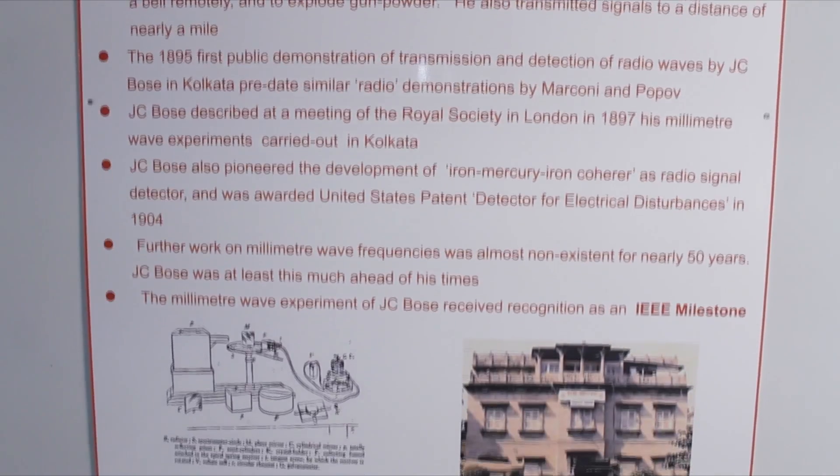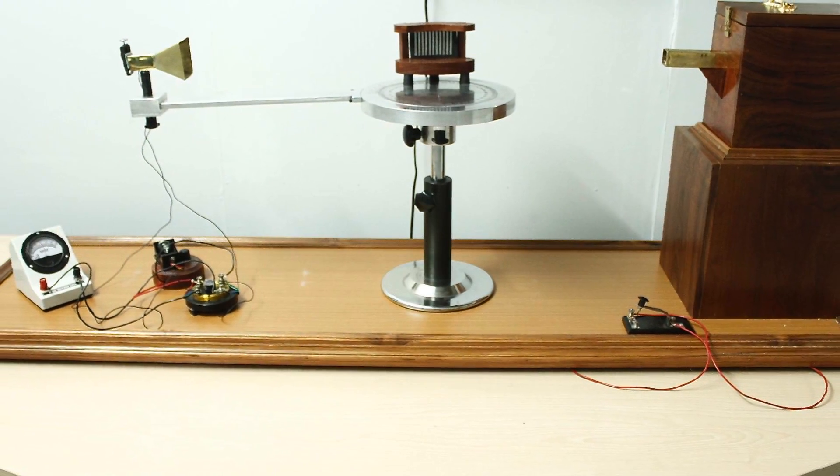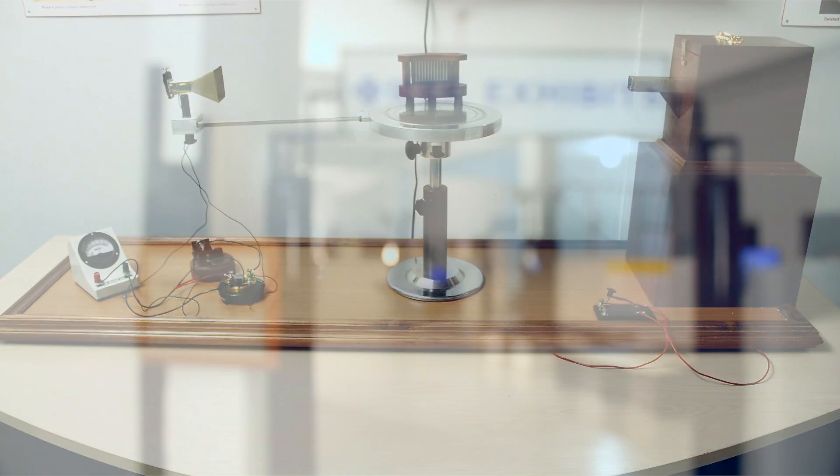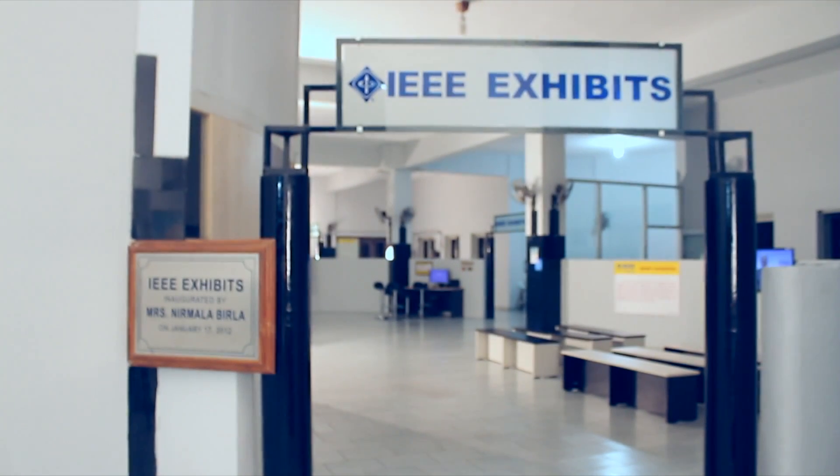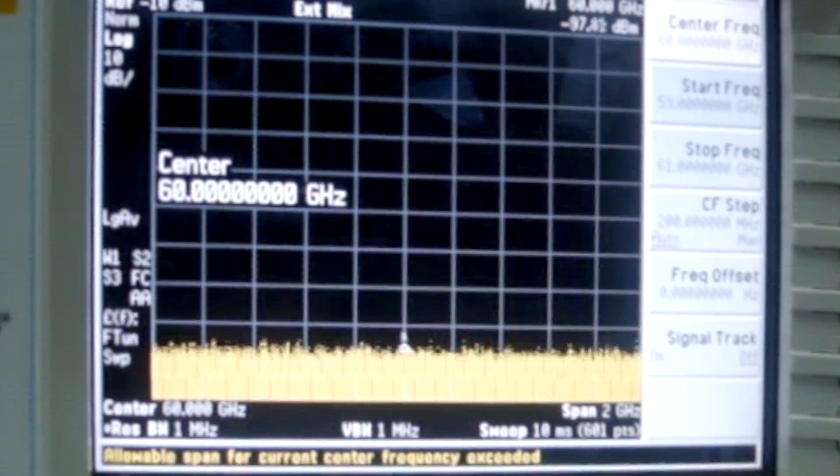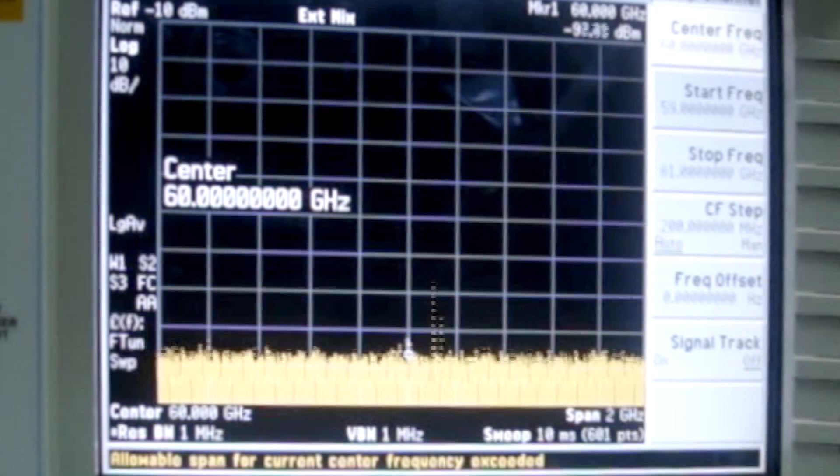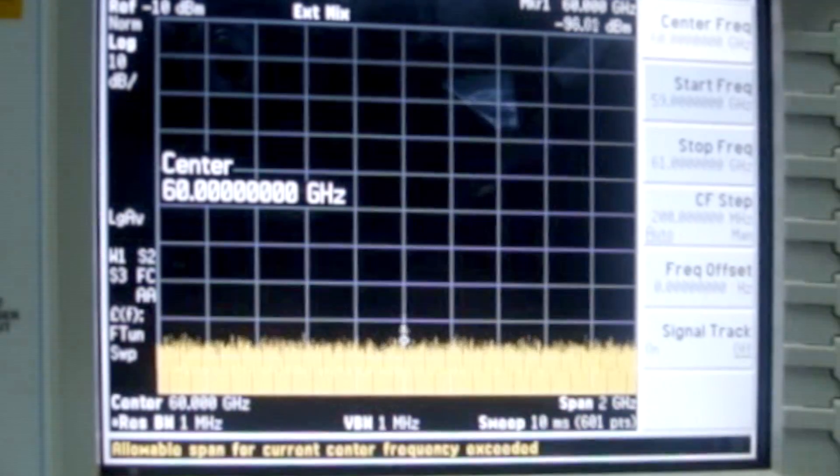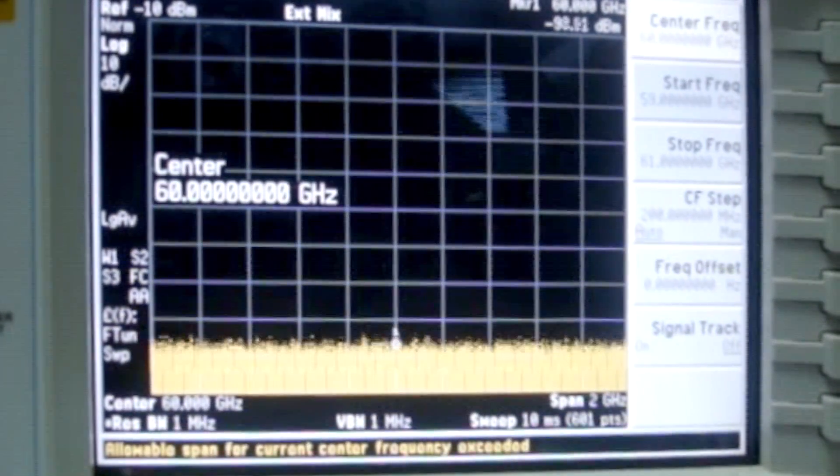A working replica of the original Bose experiment is now available at the Biller Science Centre Hyderabad, India as part of the IEEE exhibits. The frequency of radiation in this replica exhibit was confirmed to be between 59 and 61 gigahertz using a spectrum analyzer.